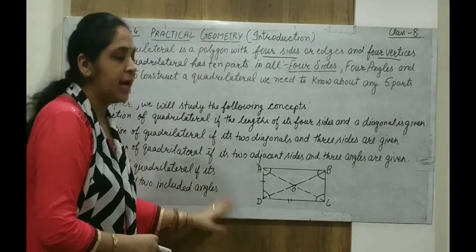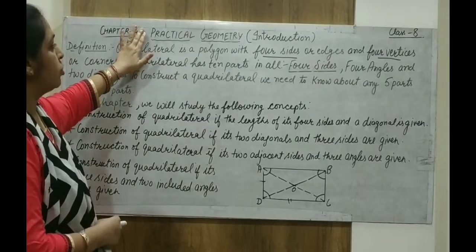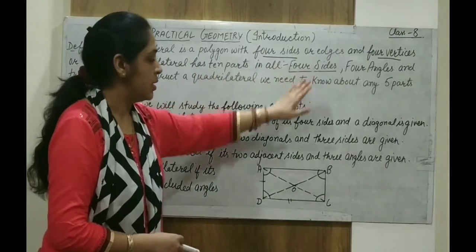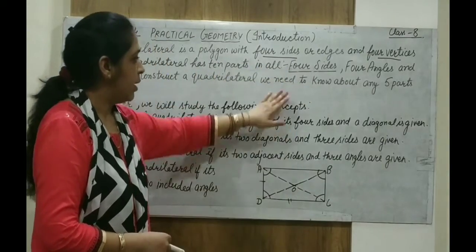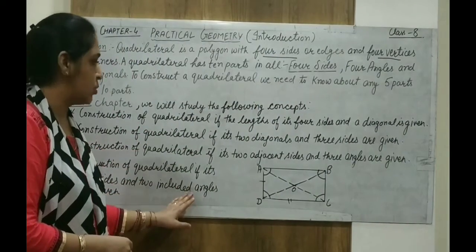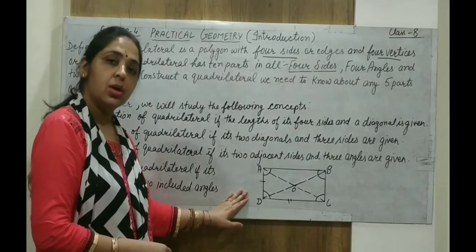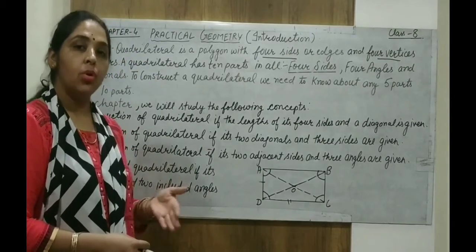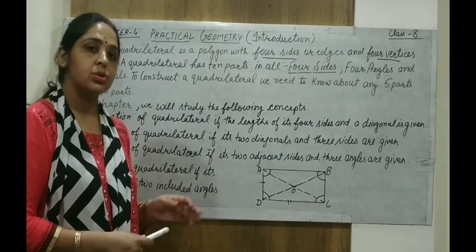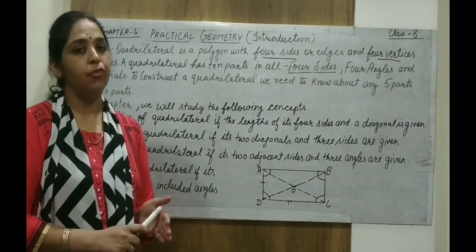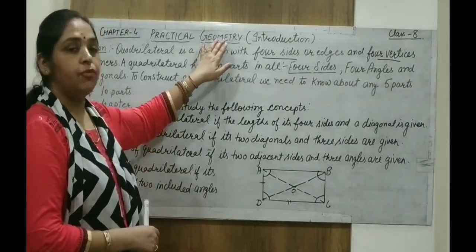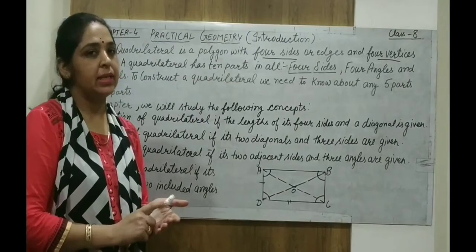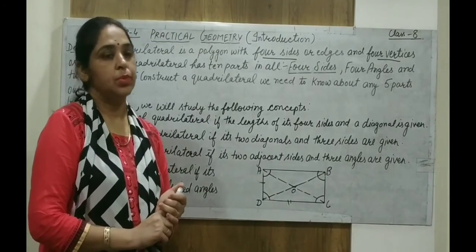I hope you now understand the meaning of practical geometry. We have to construct a quadrilateral — a four-sided figure. The ten parts of this four-sided figure we have understood. Any five parts are given using one of these conditions, and by using those conditions we can construct a quadrilateral. I will also send a link so that you get a better introduction to practical geometry. Tomorrow, all of you must be ready with your geometry instruments — compass, scale, pencil, eraser, everything — so that we can construct some quadrilaterals.